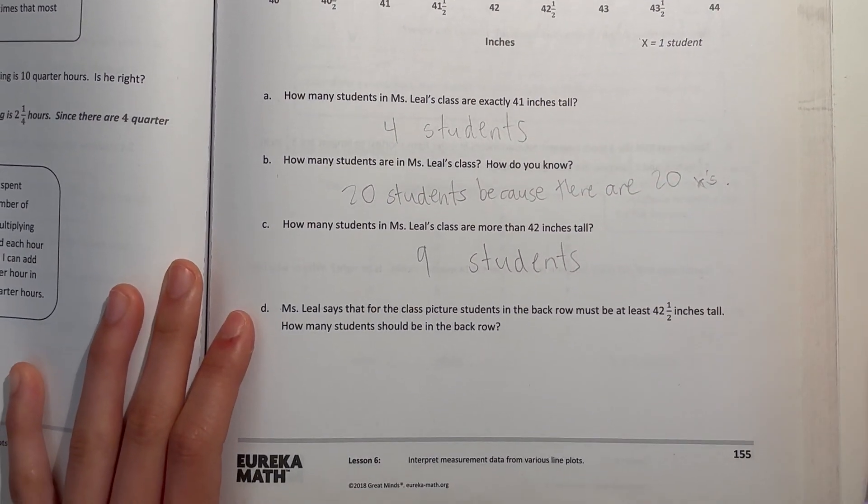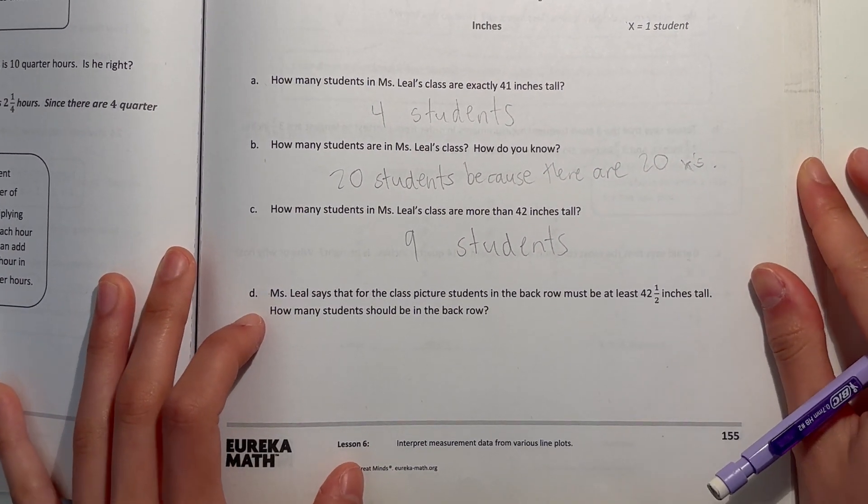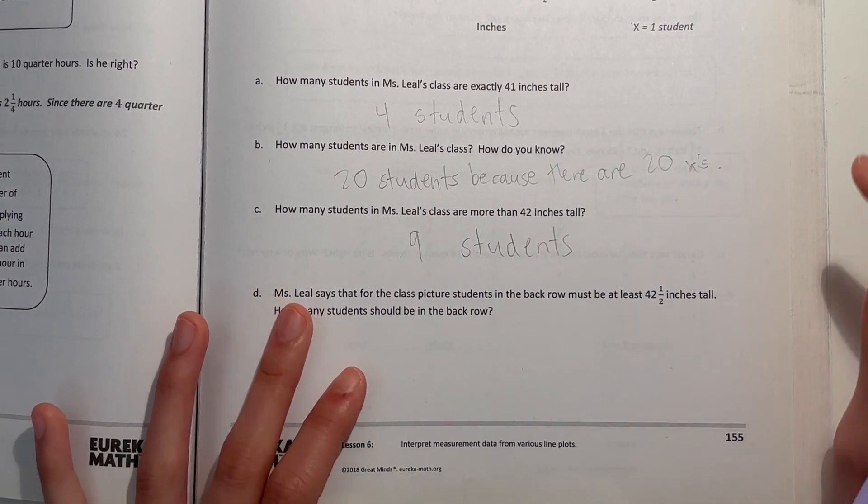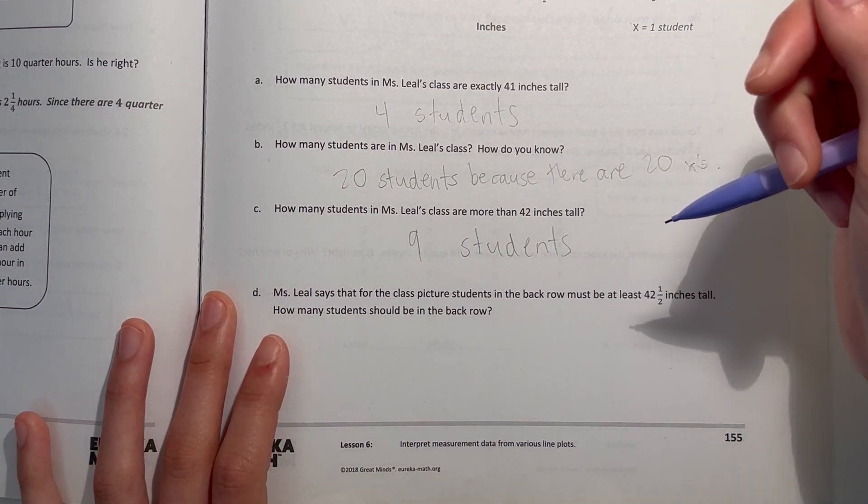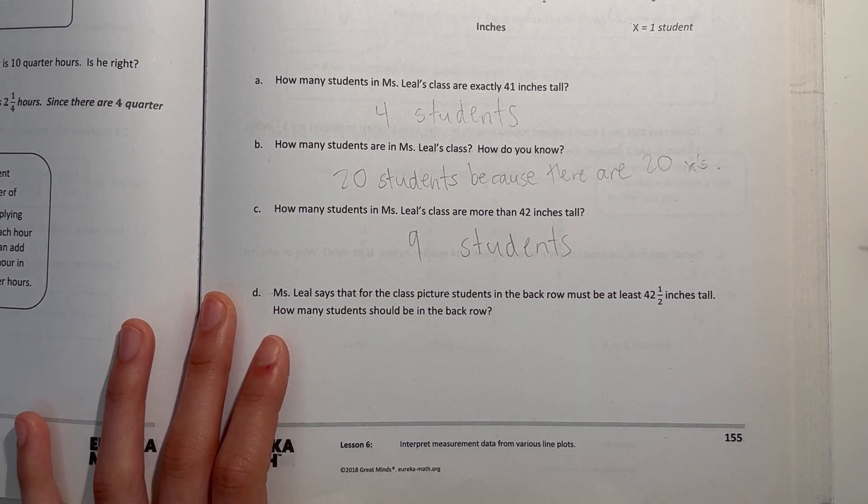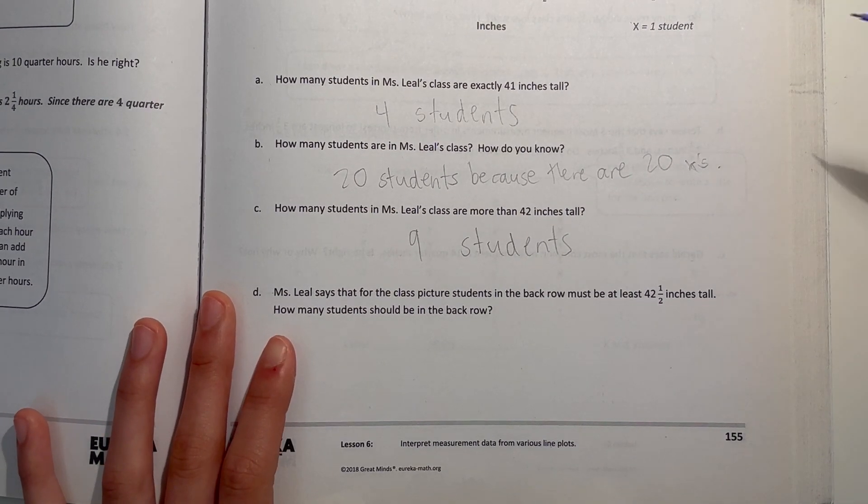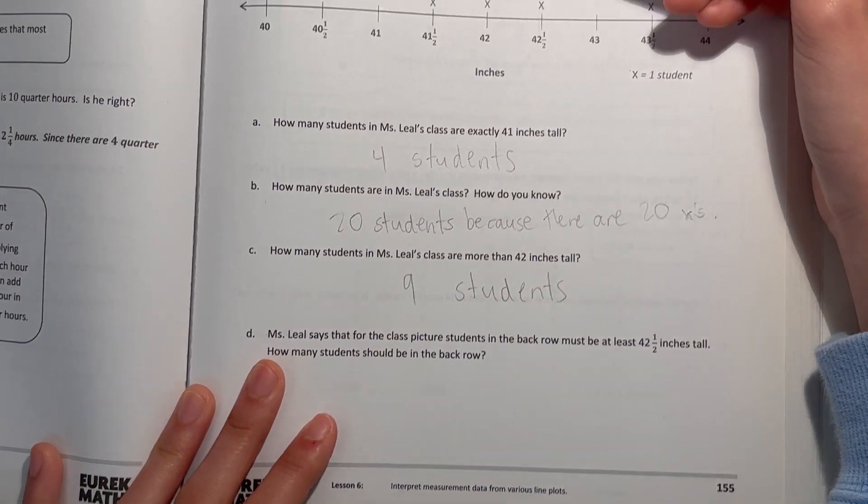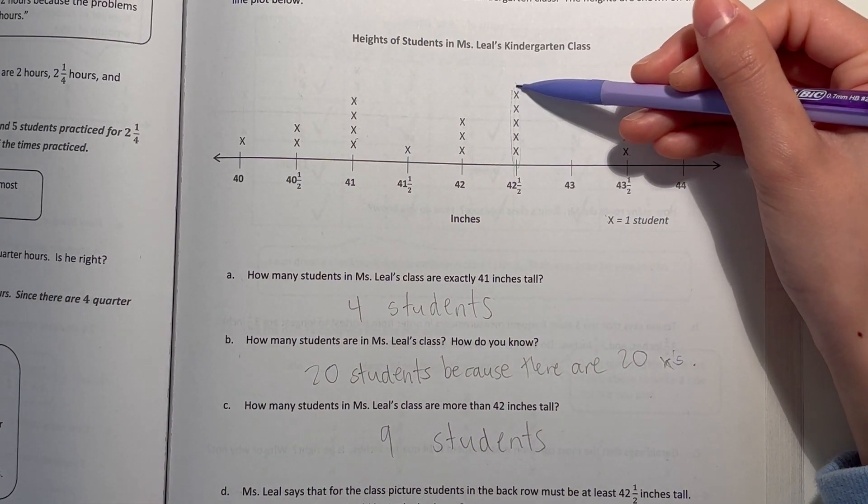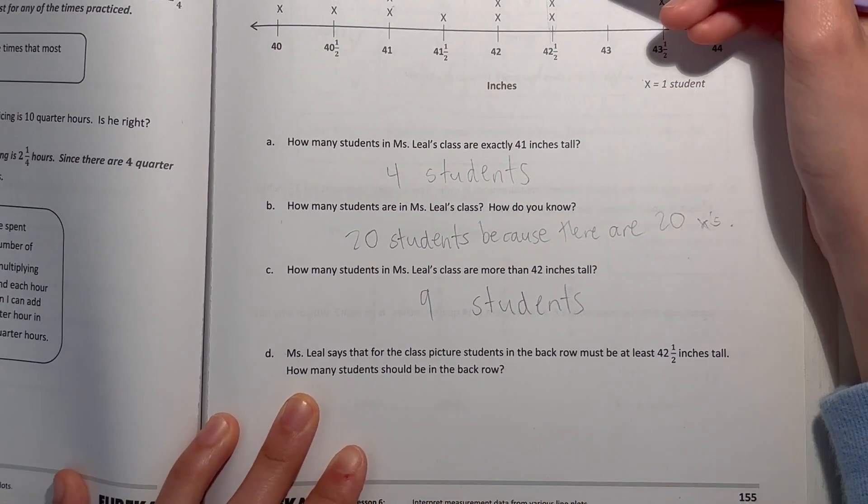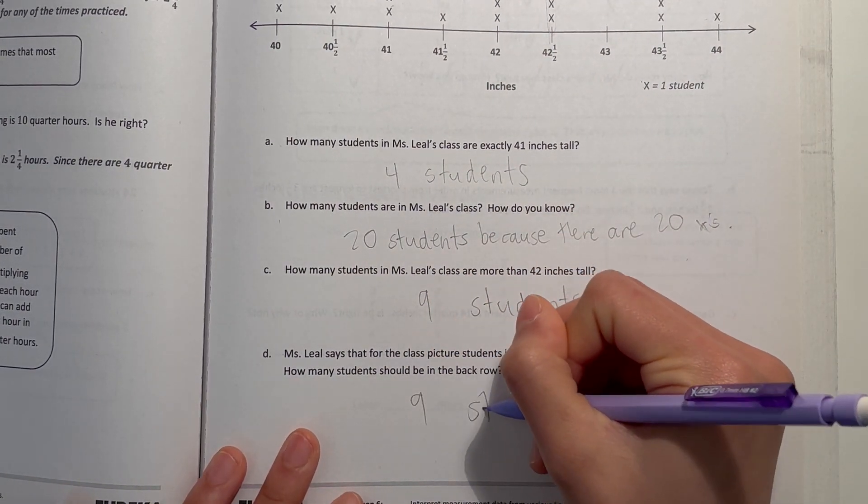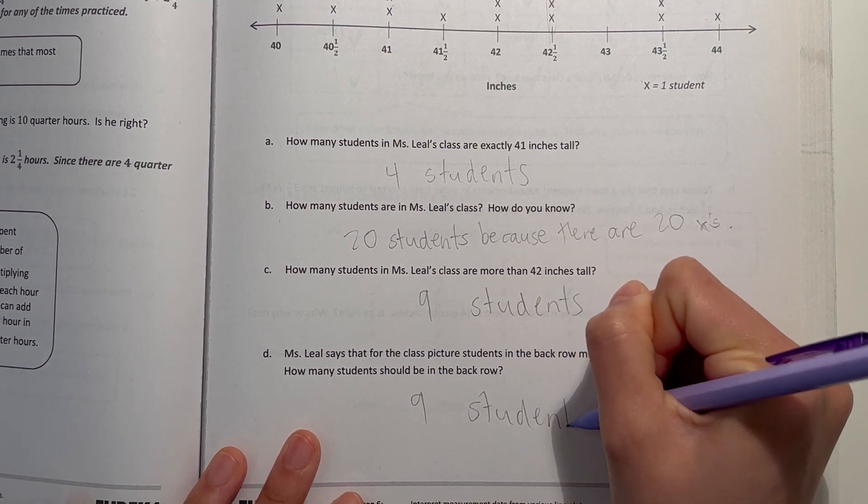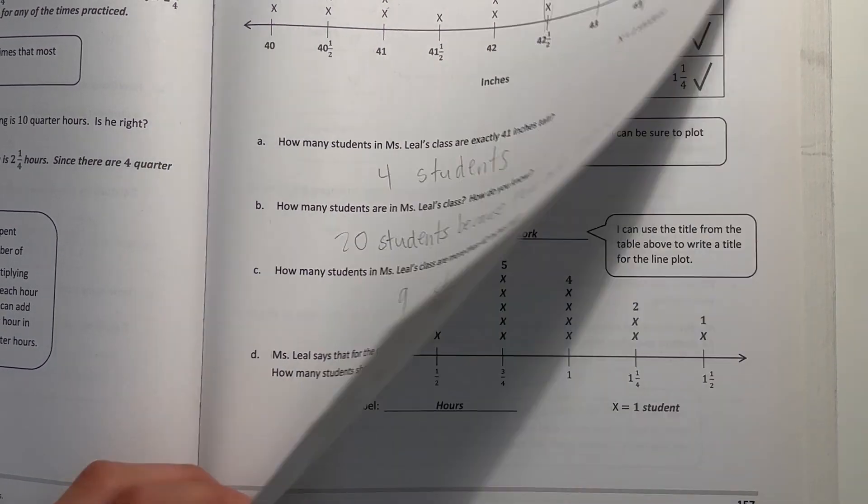And D says, Ms. Leal says that for the class picture, students in the back row must be at least 42 and a half inches tall. So how many students should be in the back row? That's at least 42 and 1 half, so from there onward. So that's just 9 students. Alright, next page.